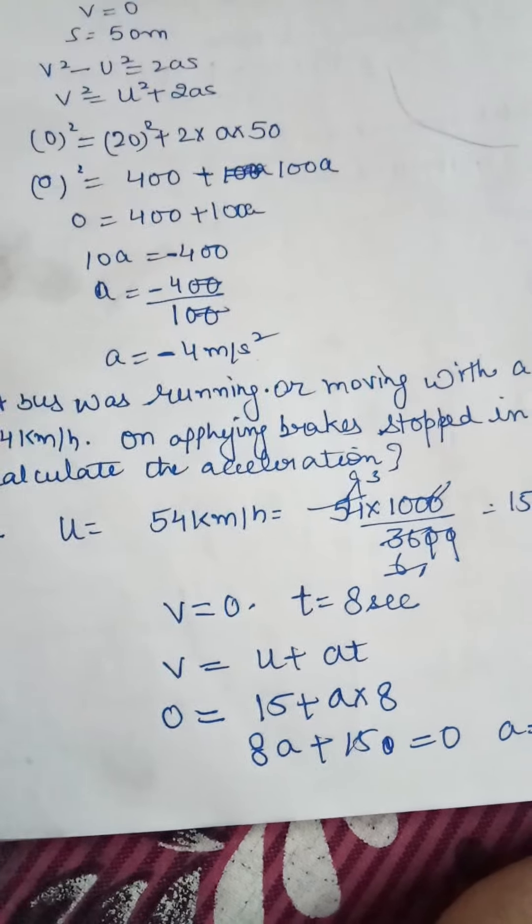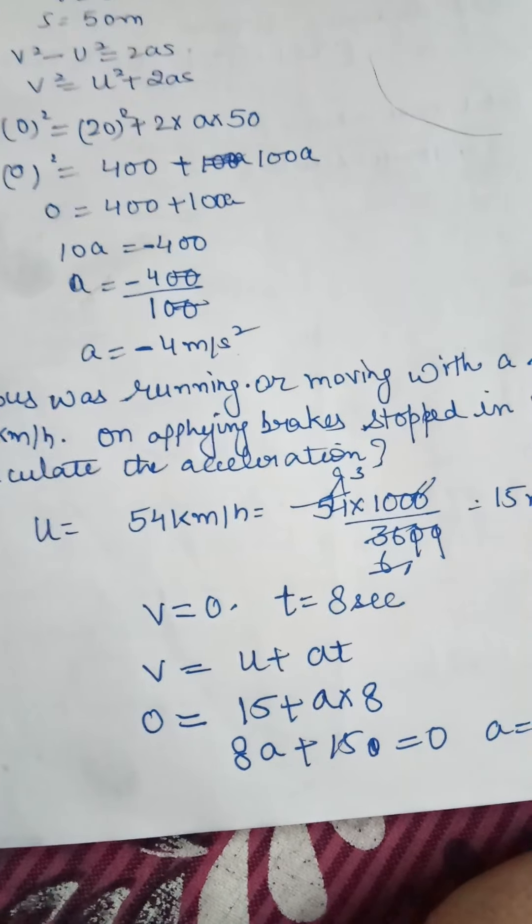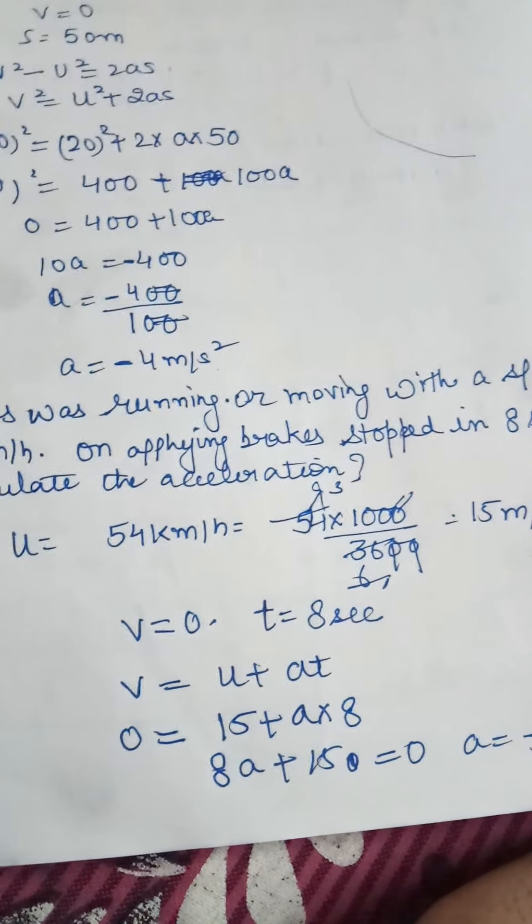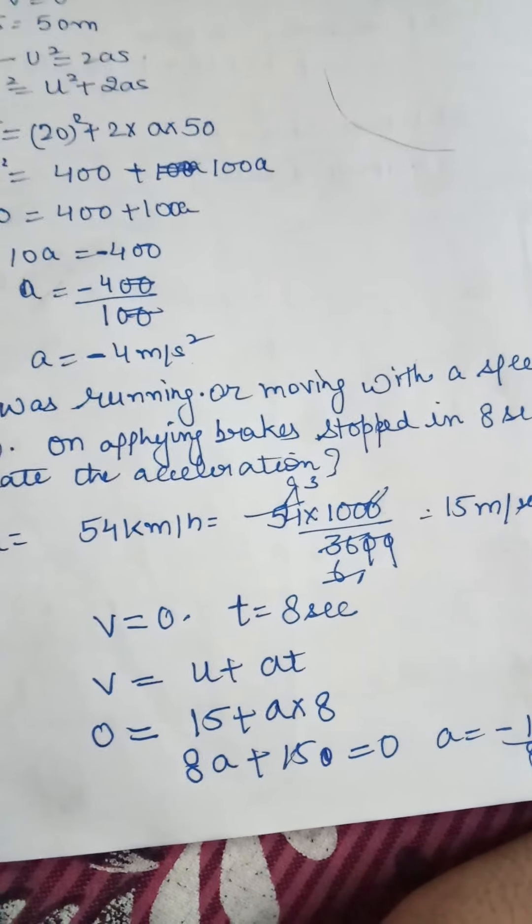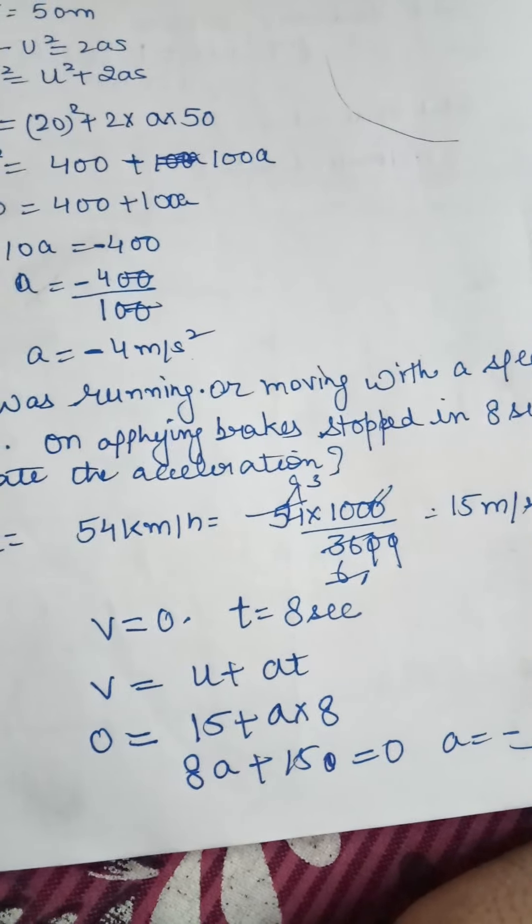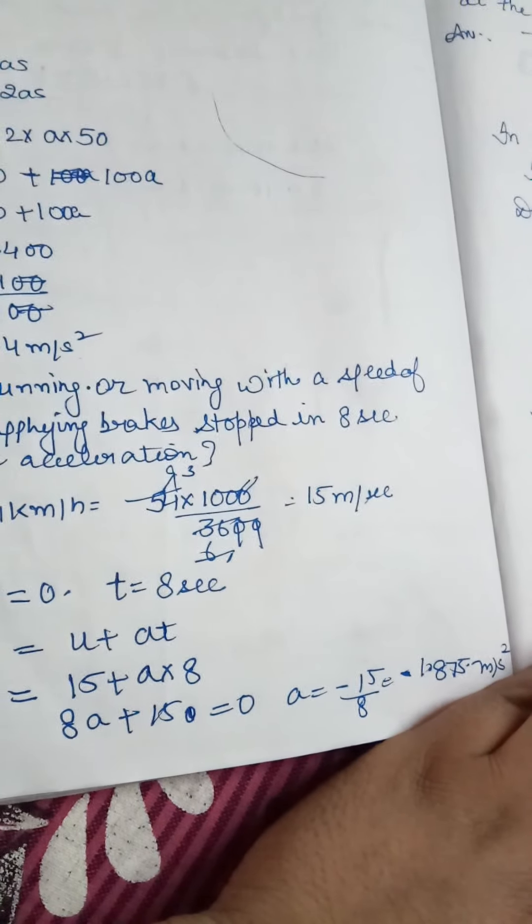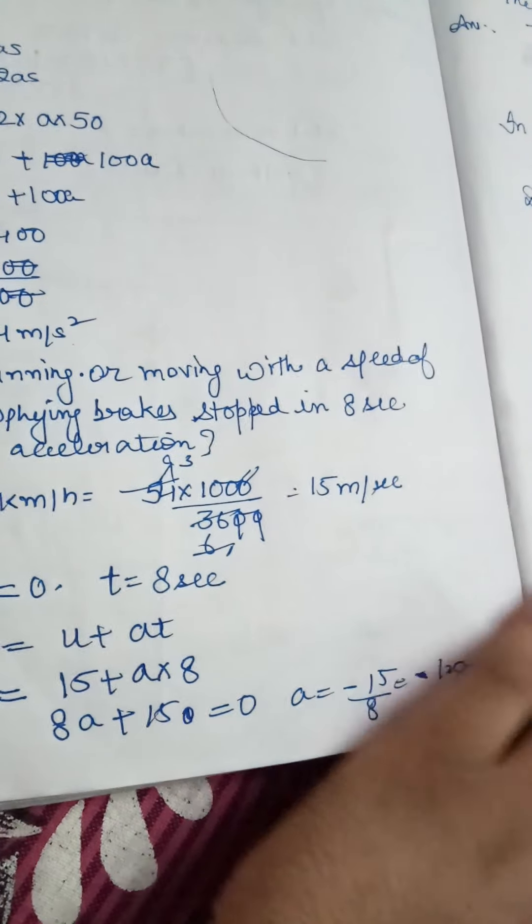U given is 54 km per hour. We will convert to meters per second: 54 multiplied by 1000 divided by 3600, that is 15 meters per second. V is 0, t is 8 seconds. Using V = U + at, we get a = minus 1.875 meters per second squared.